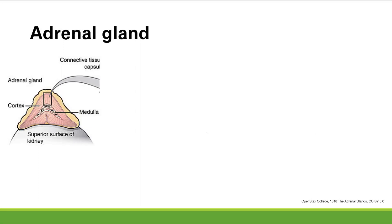The adrenal gland is a very important part of the endocrine system. It sits on top of the kidney. Since you have two kidneys, you also have two adrenal glands.